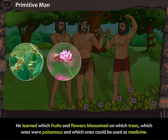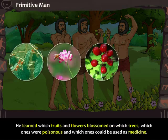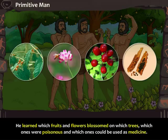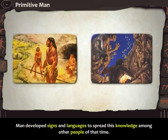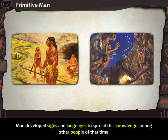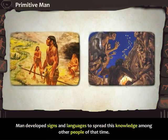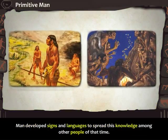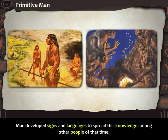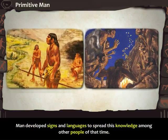He learnt which fruits and flowers blossomed on which trees, which ones were poisonous and which ones could be used as medicine. Man developed signs and languages to spread this knowledge among other people of that time.